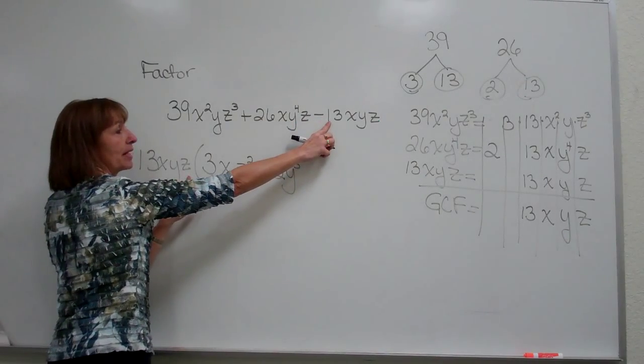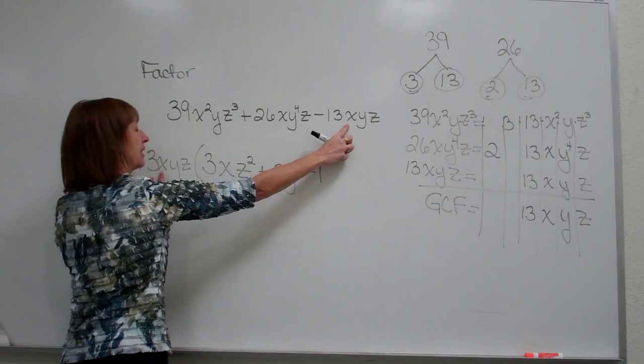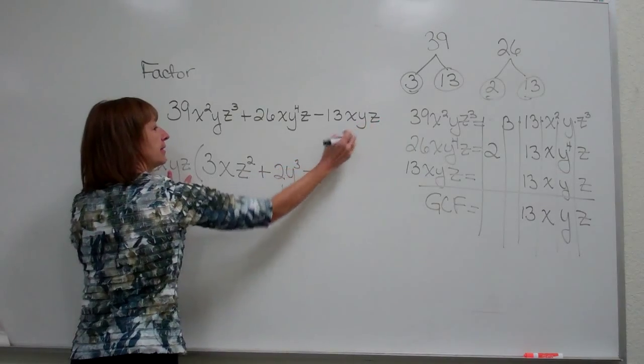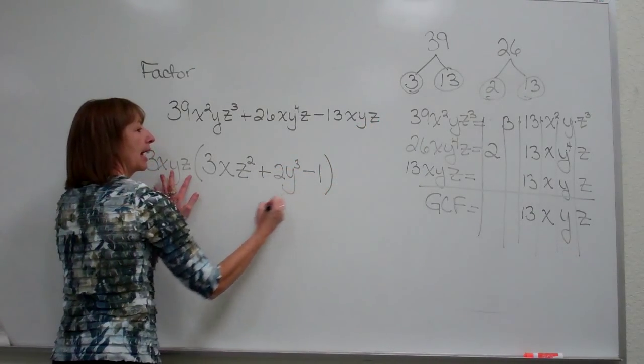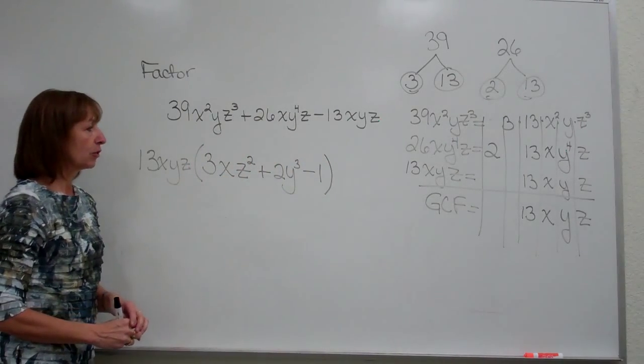And then for the last term, negative 13 divided by 13 is a minus 1. And I divided out the x, the y, and the z, so that is all I have for that third term.